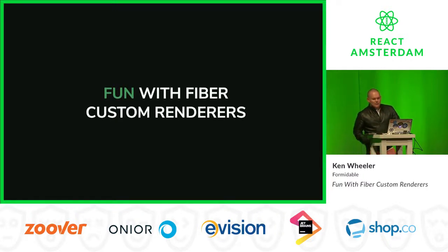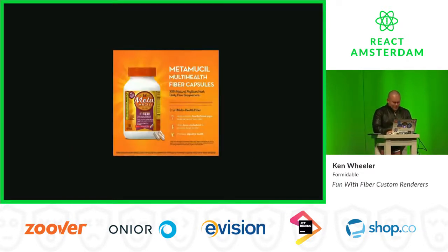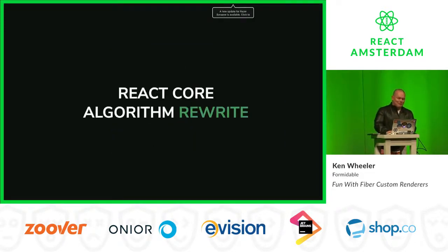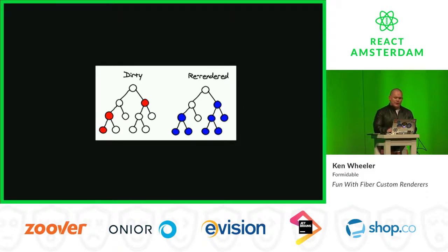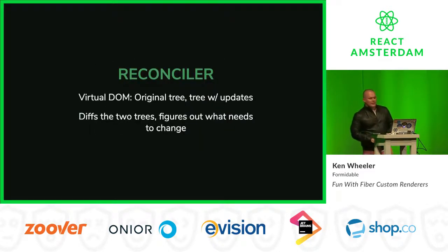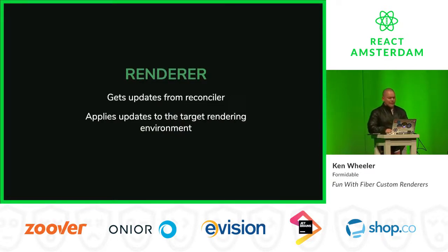If you guys have not heard of Fiber, I'll give you a brief overview. React Fiber is a React core algorithm rewrite. You've probably seen the chart where part of the tree gets invalidated and then re-renders. The React core algorithm has a reconciler — you take the original tree and the updated tree, and the reconciler figures out the differences. Then your renderer gets those updates and applies them to the target rendering environment.